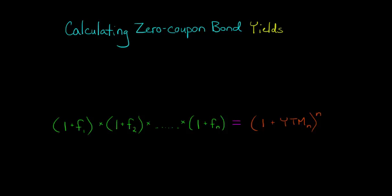In our last video, we talked about how you could compute the forward rate for a given year using zero-coupon bond yields. But what if you don't know a zero-coupon bond yield and you do know the forward rate?